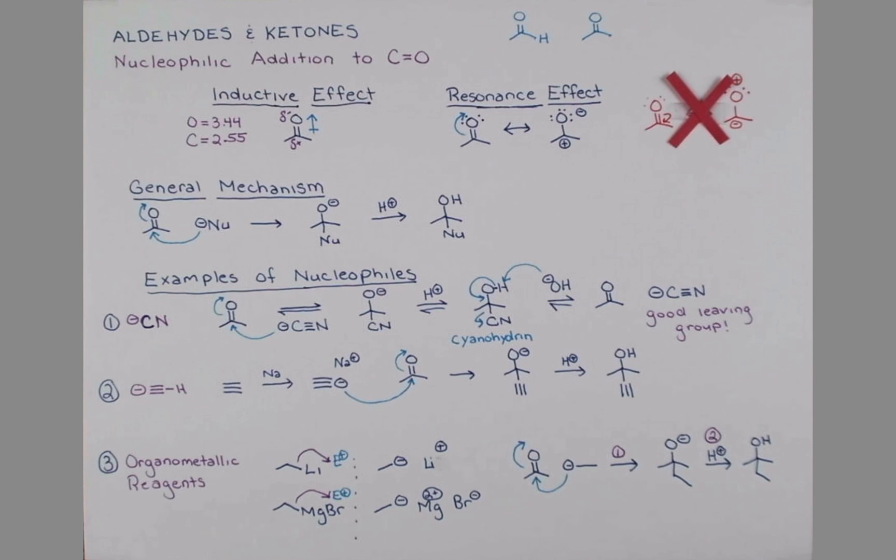In this lesson, we talked about the inductive and resonance effects that make aldehydes and ketones so special and have this electropositive carbon atom that can react with nucleophiles to form alcohols. We talked about three examples of these nucleophiles: cyanide, the acetylide anion, and organometallic reagents.